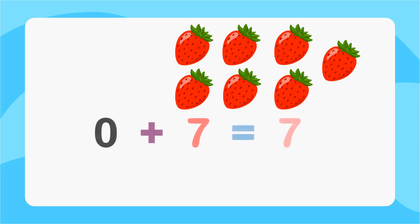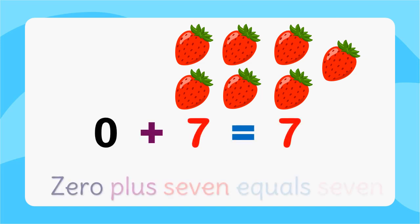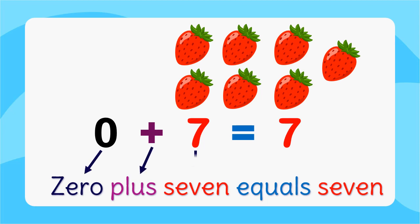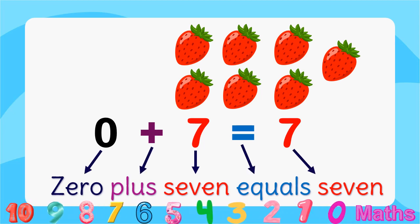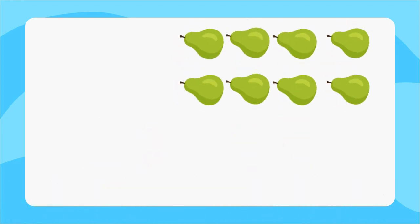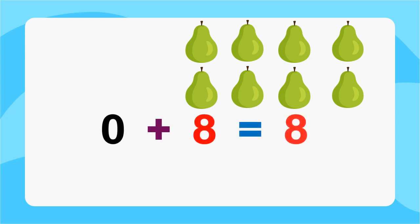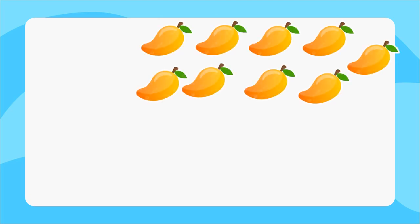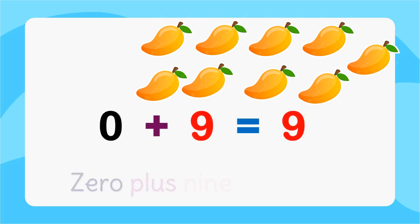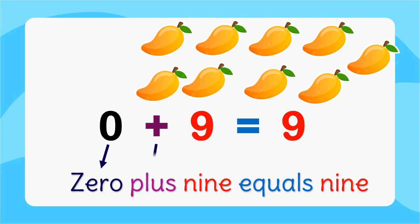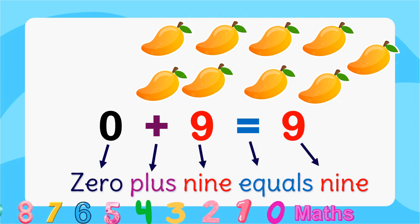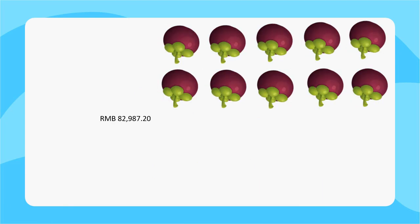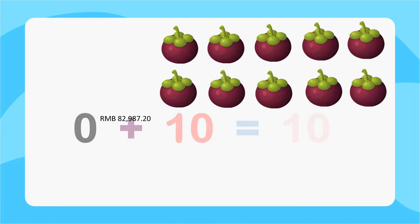0 plus 7 equals 7. 0 plus 8 equals 8. 0 plus 9 equals 9. 0 plus 10 equals 10.